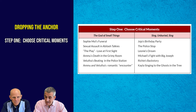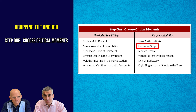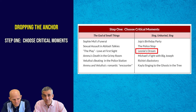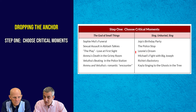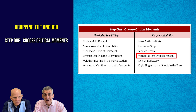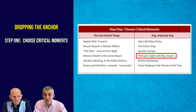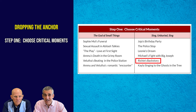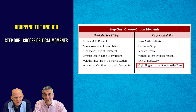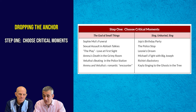Similarly, with Sing, Unburied, Sing, we think about Jojo's birthday party at the beginning where his mother lets him down, the police stop where systemic racism is on full display and Jojo is oppressed because of his skin color, Leonie's dream about her inadequacy as a mother, Michael's fight with Big Joseph over his interracial marriage and relationship, Richie's backstory and the torture he endured in Parchman Prison, and Kayla singing to the ghosts in the tree at the end — possibly gesturing toward ending systemic racism for the next generation. All the key themes are located in those spots.